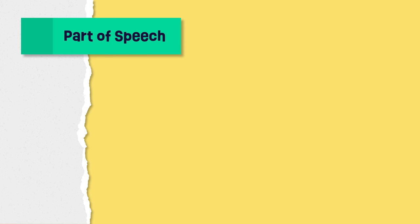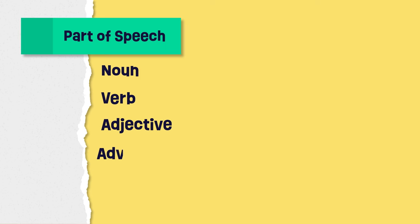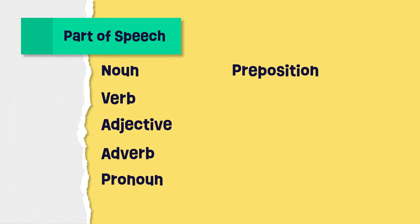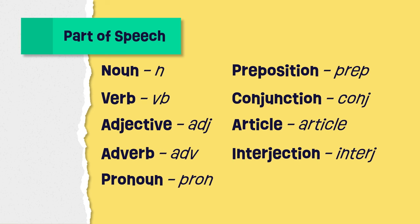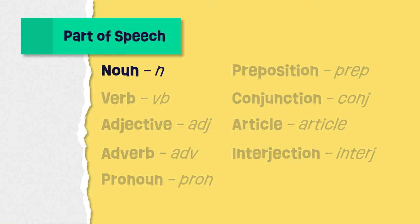Every word has a job or function in a sentence, which we call a part of speech. A word can be a noun, verb, adjective, adverb, pronoun, preposition, conjunction, article, or interjection. In some dictionaries, the part of speech for each entry is listed as an abbreviation, like n for noun, vb for verb, and adj for adjective.